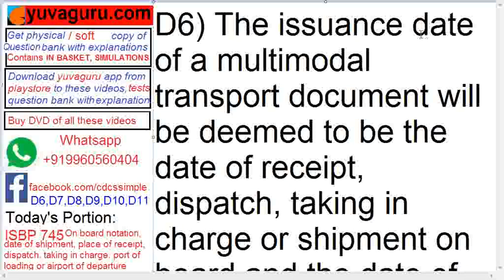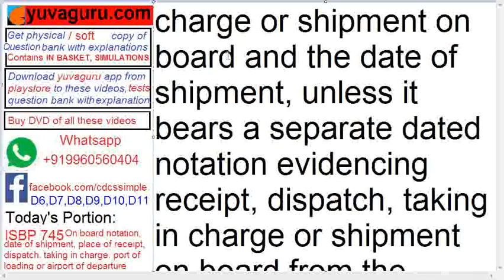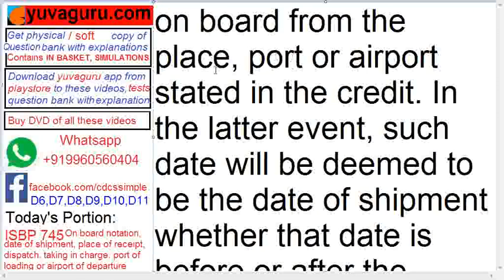The issuance date of an MTD will be deemed to be the date of received, dispatched, taking in charge, or shipment on board, and the date of shipment, unless there is a separate dated notation evidencing received, dispatched, taking in charge, or shipment on board from the place, port, or airport stated in the credit.